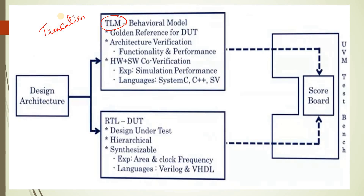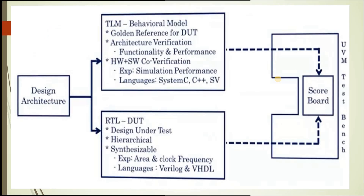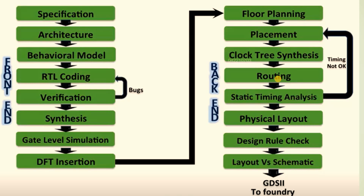We feed this transaction level model and the RTL model to the UVM testbench scoreboard. The scoreboard is one verification component that contains checkers and verifies the functionality of a design. In simple terms, the behavioral model is a transaction level model which is not synthesizable. We have now completed the stages of specification, architecture, and behavioral model.